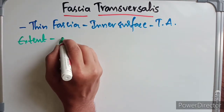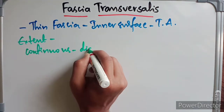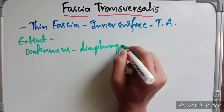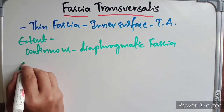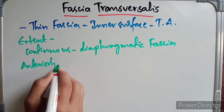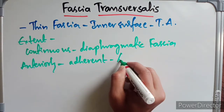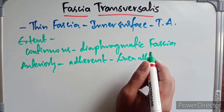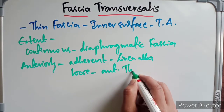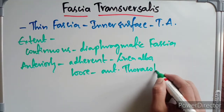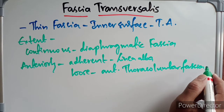So superiorly it is continuous from the diaphragmatic fascia, anteriorly it is adherent to the linea alba, and posteriorly it is loose to the anterior layer of thoracolumbar fascia. These are the extents of the fascia transversalis.